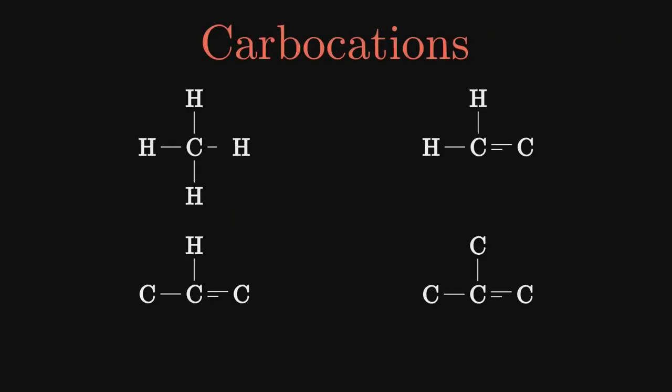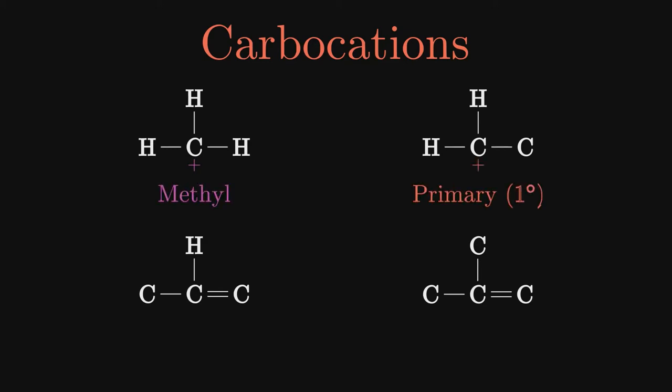Well, the clue is in the intermediate. Carbocations are ions where there is a positive charge on a carbon atom. The four simplest carbocations are named and identified in the same way that the radicals were: methyl, primary, secondary, and tertiary, and we can also label them the same way.